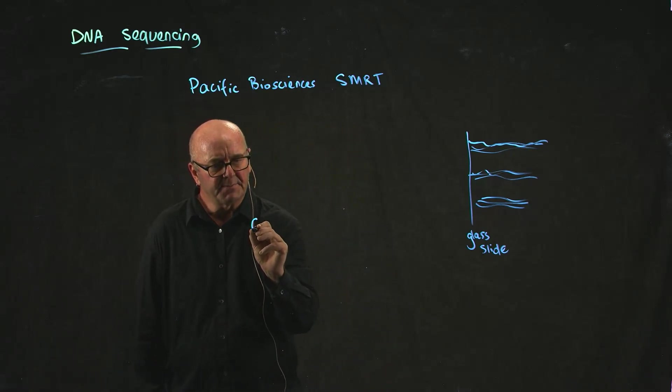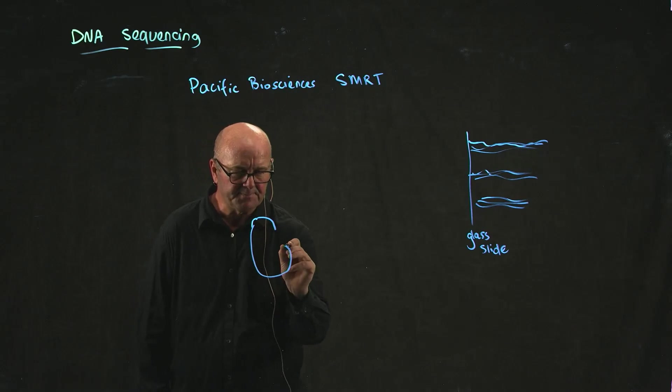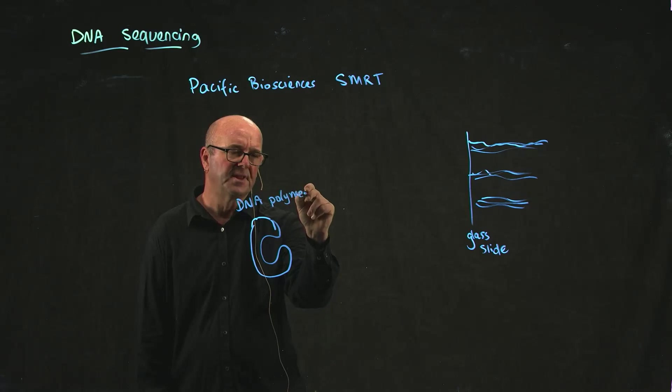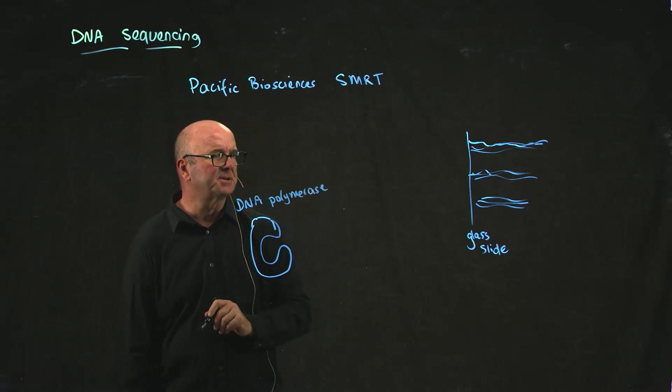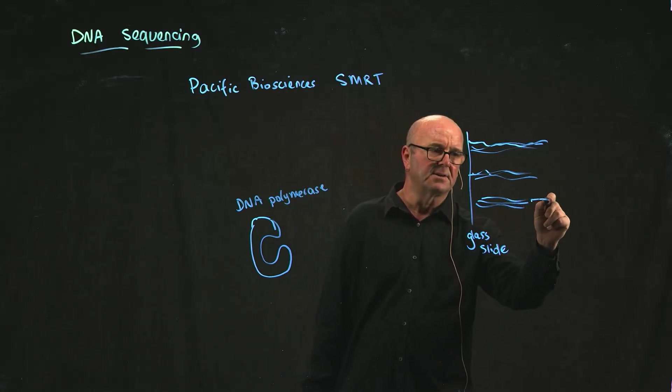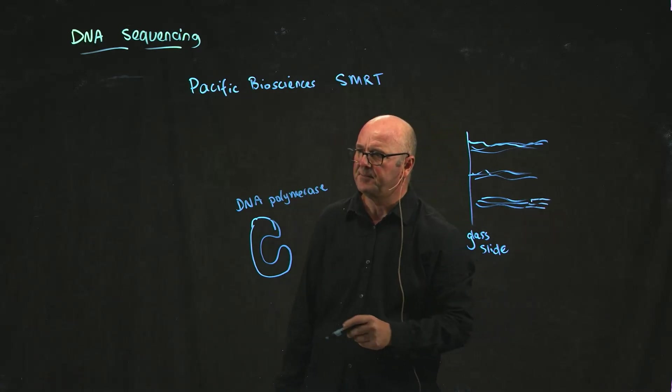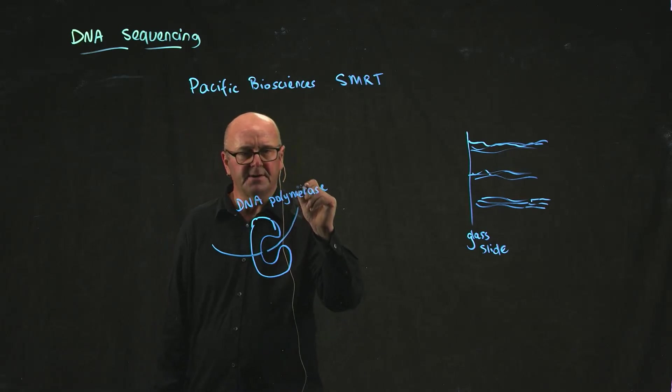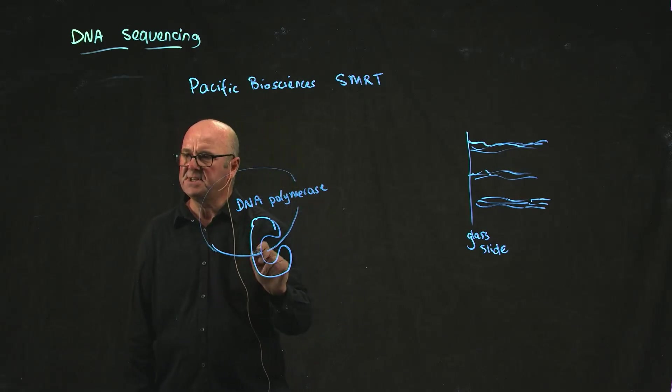With the Pacific Biosciences technology, you actually do something different, which is that you attach not the DNA, but the enzyme that does the reaction called DNA polymerase. This is the enzyme that will add nucleotides onto the end of DNA. You then feed the DNA molecule through the DNA polymerase.